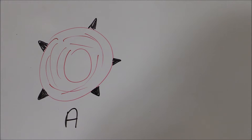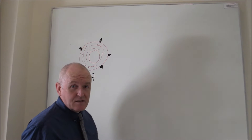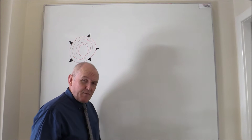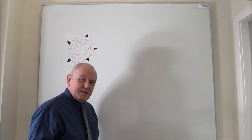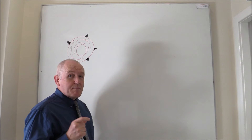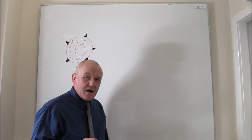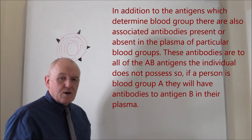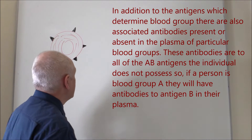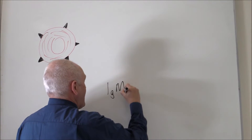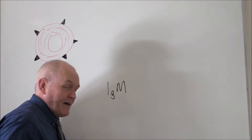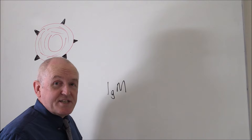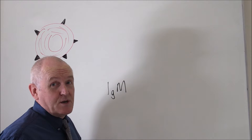Now as you know, blood consists of red cells and the plasma, because the cellular component floats in the plasma. And in the plasma there are other large molecules called immunoglobulins — these are globular immune proteins. In the blood there's a particular type of immunoglobulin called immunoglobulin type M, or IgM. These are the antibodies to the red cells of a potential recipient's or a potential donor's blood.